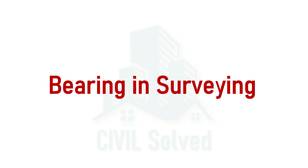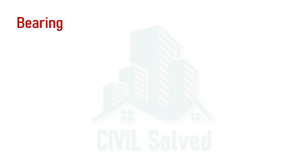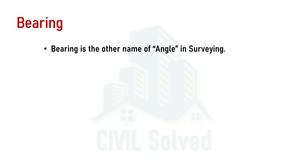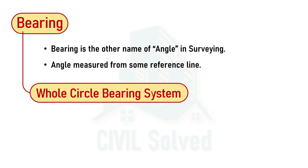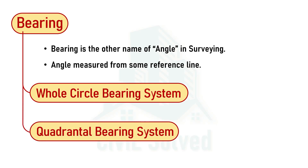In this video, I'm going to discuss bearing in surveying and also different systems of bearing. Bearing is just another name for angle in surveying, but that angle is to be measured from some reference line, and that reference line is usually the north line or the south line. There are different systems of bearing: one is the Whole Circle Bearing system and another is the Quadrantal Bearing system, which is also called the Reduced Bearing system.